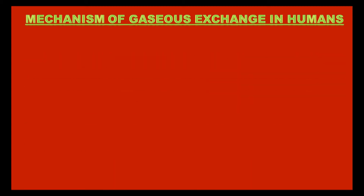Hello friends, in this video we are going to study the topic Mechanism of Gaseous Exchange in Humans. Human beings take in oxygen from the atmosphere and release carbon dioxide in return. This complete process occurs in breathing. The mechanism for moving the oxygen and carbon dioxide in and out in human beings is termed as gaseous exchange. It gets completed in three main steps.